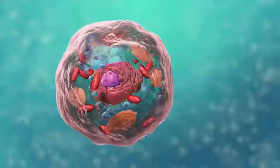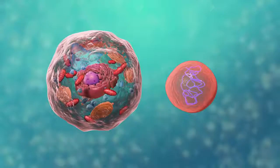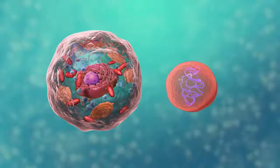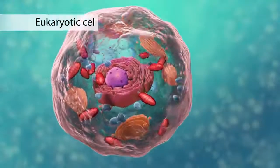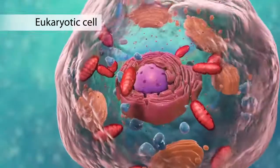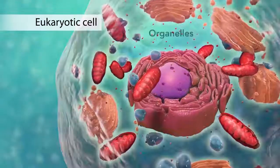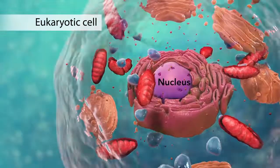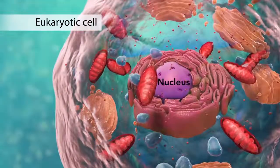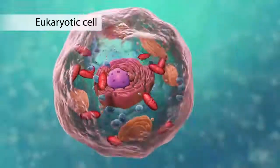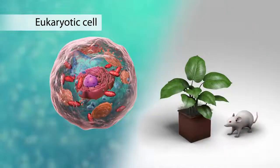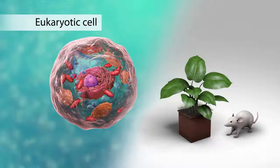There are two broad categories of cells. The first category is eukaryotic cells. They have organelles, which include the nucleus and other special parts. Eukaryotic cells are more advanced, complex cells such as those found in plants and animals.